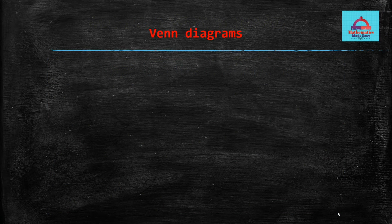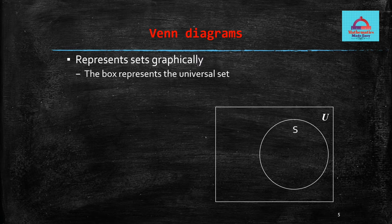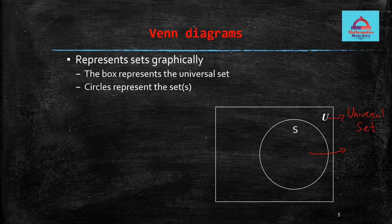Venn diagrams are a way in which you can graphically represent a given set. The set itself is represented by a circle — for example, circle S here. Capital U denotes your universal set, which is shown with the help of a rectangle. The box or rectangle represents the universal set, represented here with U. The specific set is represented by the circle shown with the capital letter S, which is inside the rectangle.